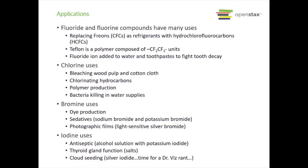Bromine is used for dye production as well as in sedatives such as sodium bromide and potassium bromide. It used to be used in photographic films as light-sensitive silver bromide. Iodine is very much used as an antiseptic — tincture of iodine is an alcohol solution with potassium iodide in it. It's also critical for thyroid gland function; our bodies need very small amounts of iodine to function properly, so iodized salt is good to have. For a hyperactive thyroid, treatment can include radioactive iodine, which kills the thyroid without surgical removal. People who have had their thyroid removed or treated with radioactive iodine usually have to take Synthroid — synthetic thyroid hormone — to keep their body functioning properly.